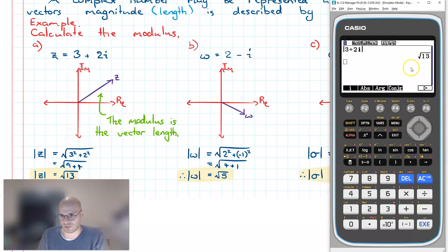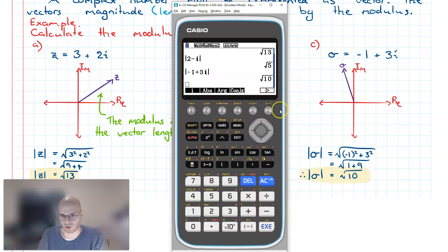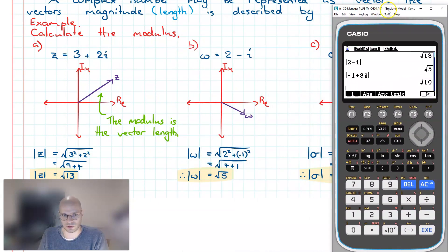Entering 3 plus 2i and pressing Execute gives us root 13. For the next one, absolute value of 2 minus i gives root 5. And for Sigma, absolute value of negative 1 plus 3i gives root 10 as expected. We've now calculated the modulus of complex numbers using both the manual method and the calculator method.